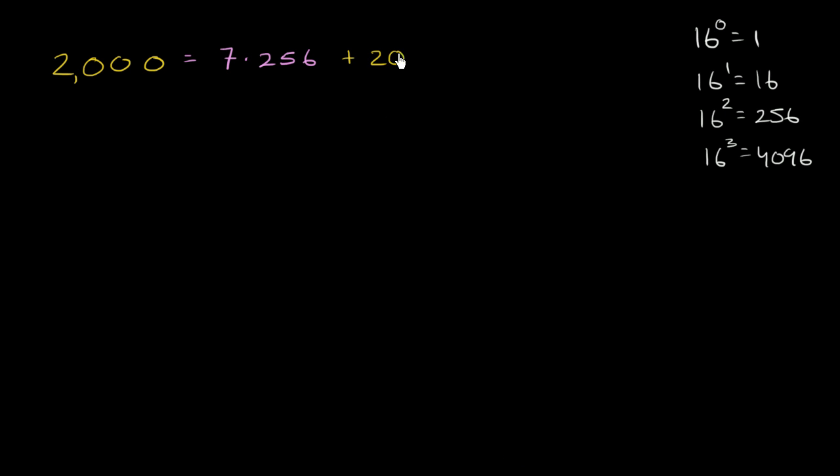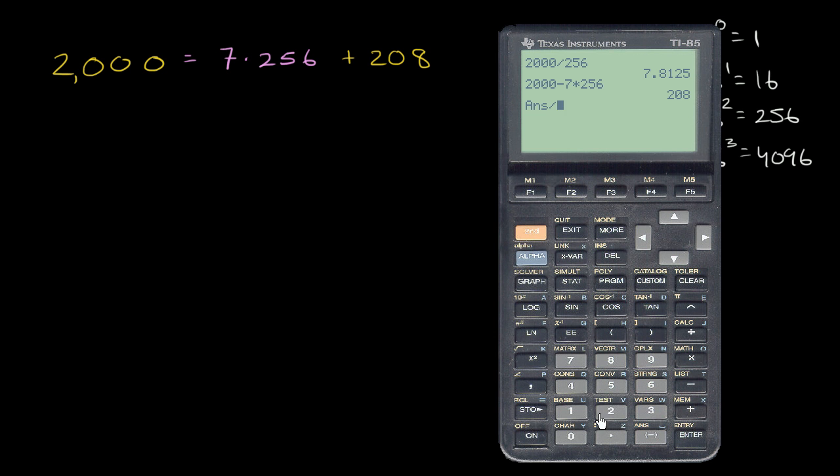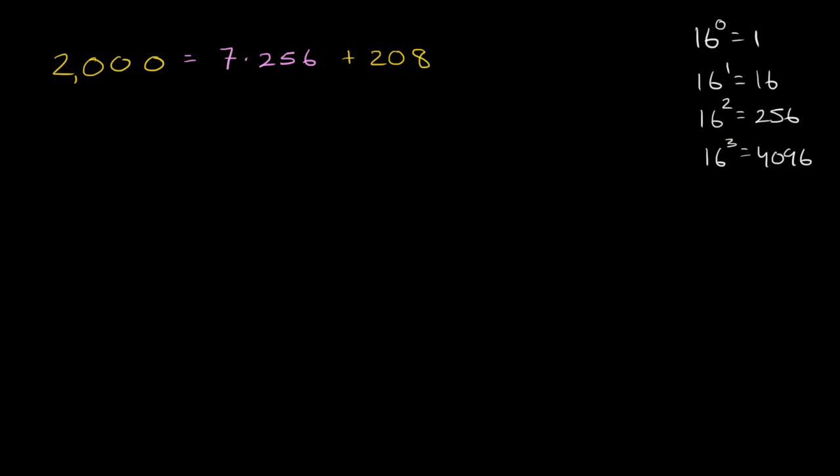Plus 208 left over. Now let's see if we can decompose 208 into powers of 16. What's the largest power of 16 that is less than or equal to this? Well, it's just going to be 16. So how many 16s go into 208? So 208 divided by 16. 13, exactly 13. We lucked out. So this is exactly 13 times 16. This right over here is exactly 13 times 16.